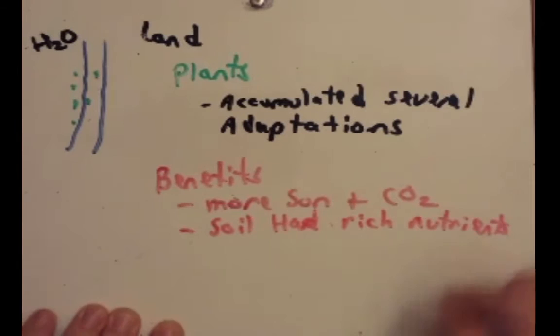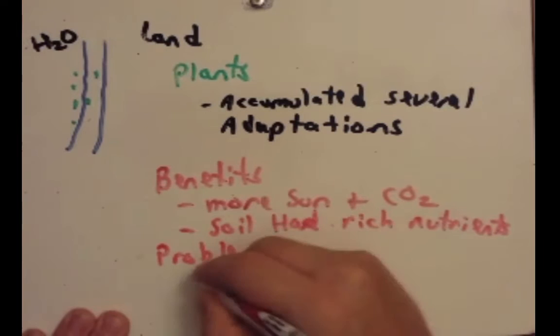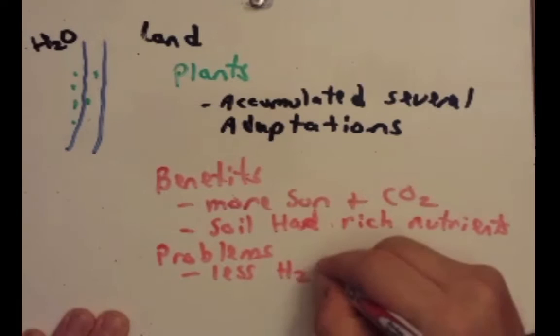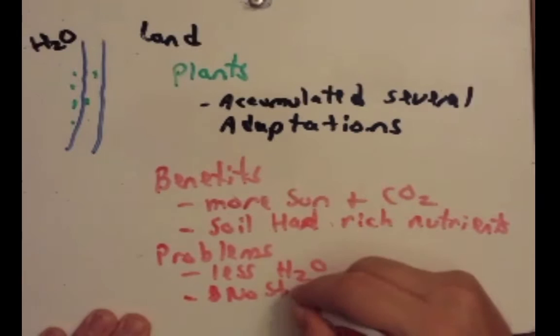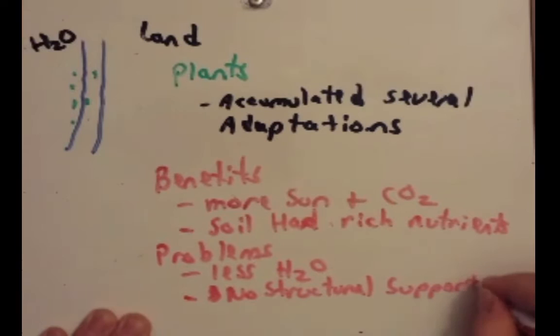Some problems include less water, obviously. Initially, no structural support. They just spent millions of years in the water as a species. And when you plop them on land, the gravity that's associated with the land would cause them to collapse. Your book gives a nice example when they say if you've ever seen a jellyfish that's taken out of water, it just sort of collapses on itself. And this is exactly what would happen as algae moved to land.